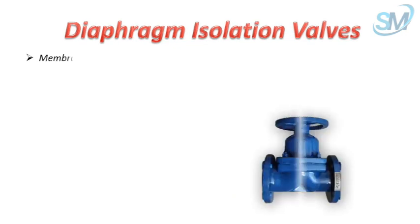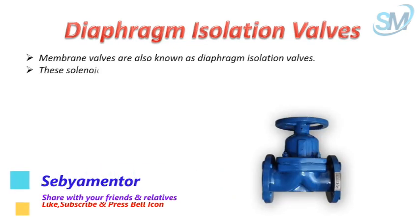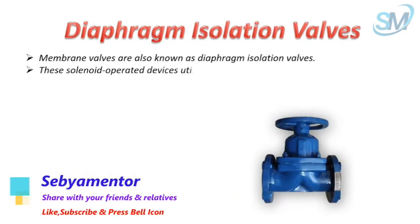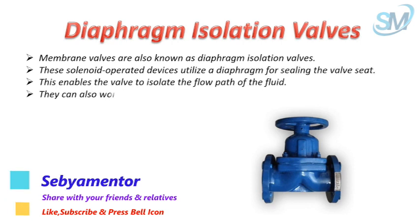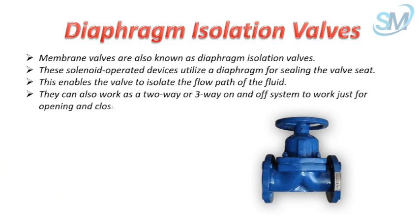Membrane valves are also known as diaphragm isolation valves. These solenoid-operated devices utilize a diaphragm for sealing the valve seat, enabling the valve to isolate the flow path of the fluid. They can also work as a two-way or three-way on-and-off system for simply opening and closing the flow of the fluid.